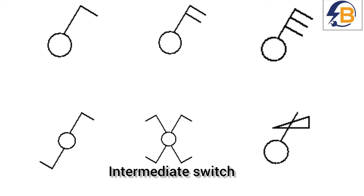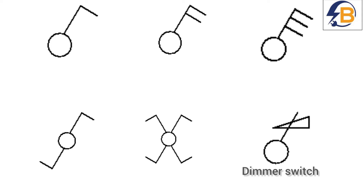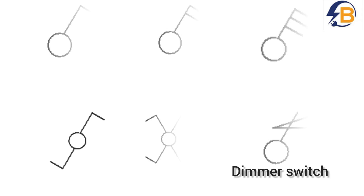This is the intermediate switch. An intermediate switch is used when you want to have an arrangement that enables you to control a light or a number of lights from three or more different positions. And then this is the symbol used to represent a dimmer switch. A dimmer switch is used when you want to control the brightness of a light — to increase or reduce the brightness of the lamp.